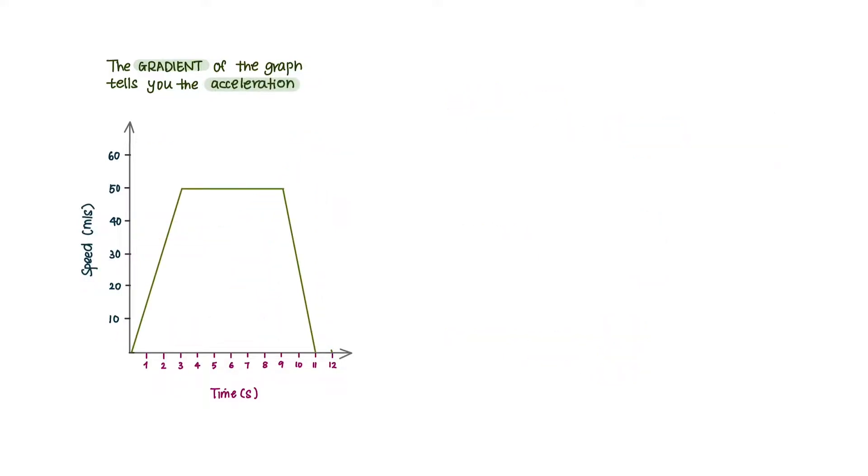A speed-time graph tells us how an object's speed changes over time. The gradient tells you the acceleration. A straight line represents constant acceleration or deceleration, and a flat horizontal line means the object is moving at constant speed.